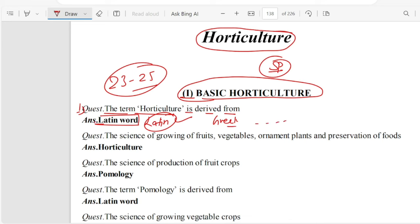Question 2. The science of growing of fruits, vegetables, ornamental plants and preservation of foods. This is Horticulture. This is Horticulture's definition.